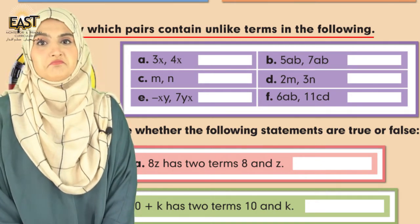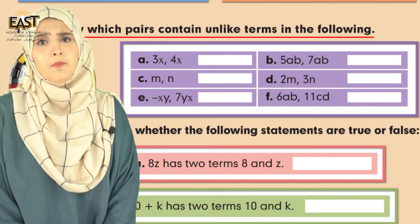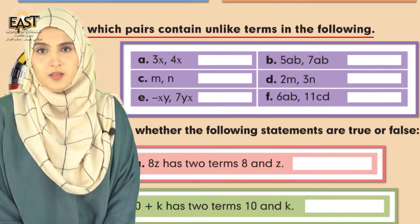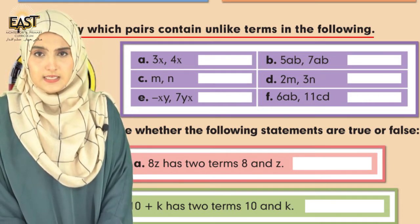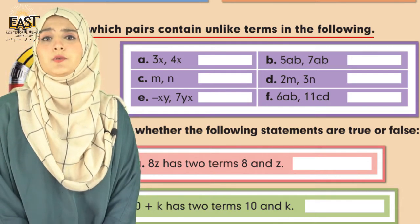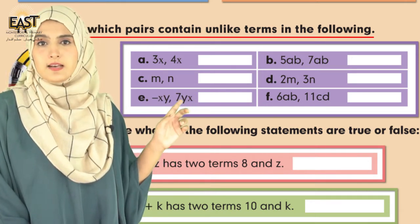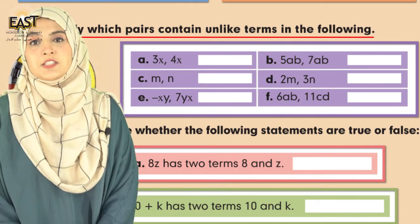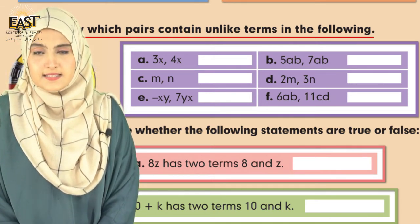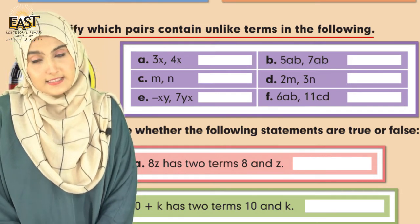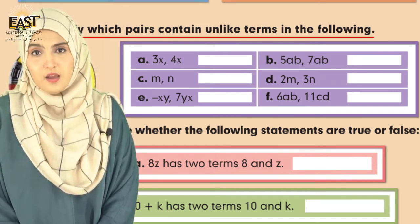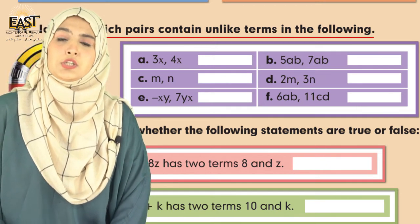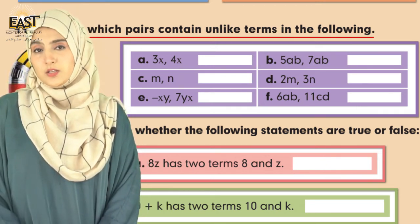Part A: 3x, 4x - like terms, same variable, this is not our target. Part B: 5ab, 7ab - this is not our target. Part C: m, n - oh yes, this is our target and you are going to mark a tick here, unlike terms. Part D: 2m, 3n - like or unlike? Unlike term, tick. Part E: minus xy, minus 5x - like terms here, no tick. Part F: 6ab, 11cd - yes, these are unlike terms. You have to complete this question at your home and don't forget to submit the screenshot of this particular question.